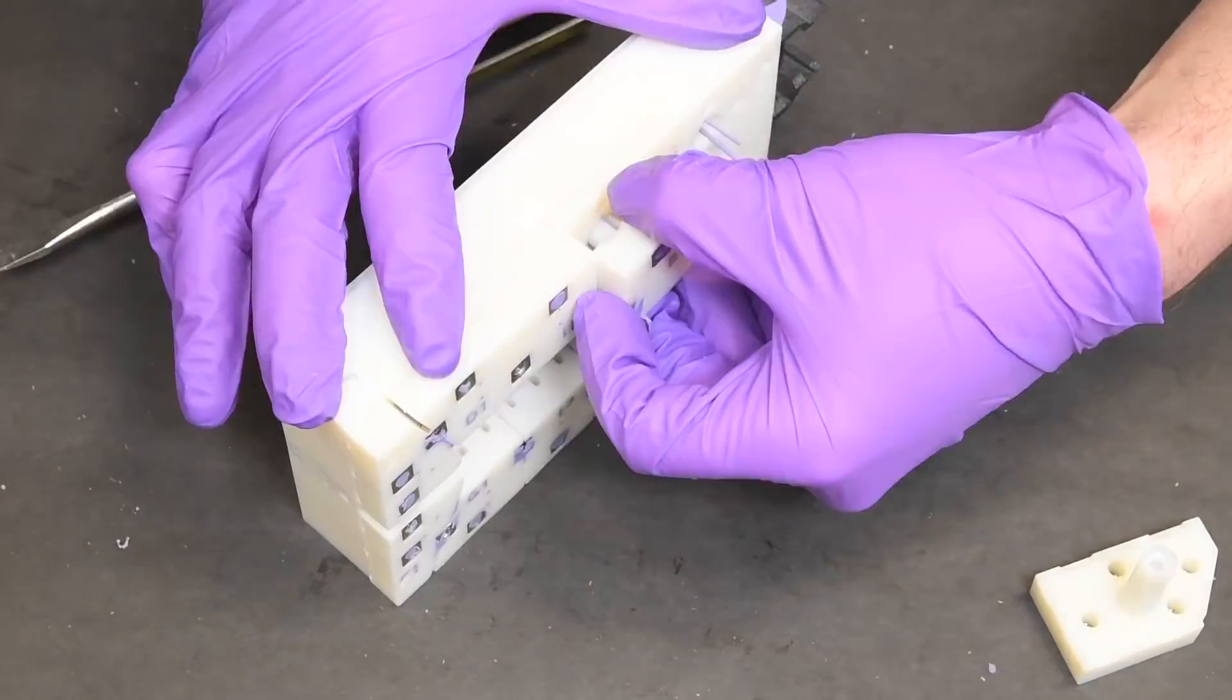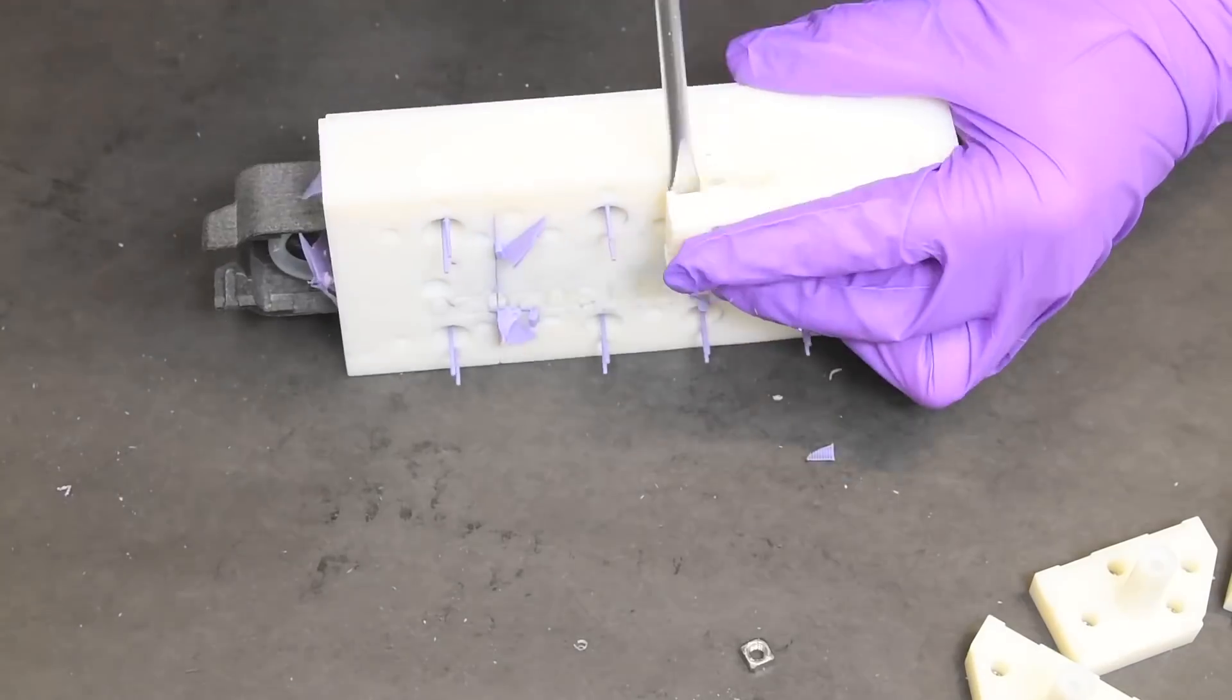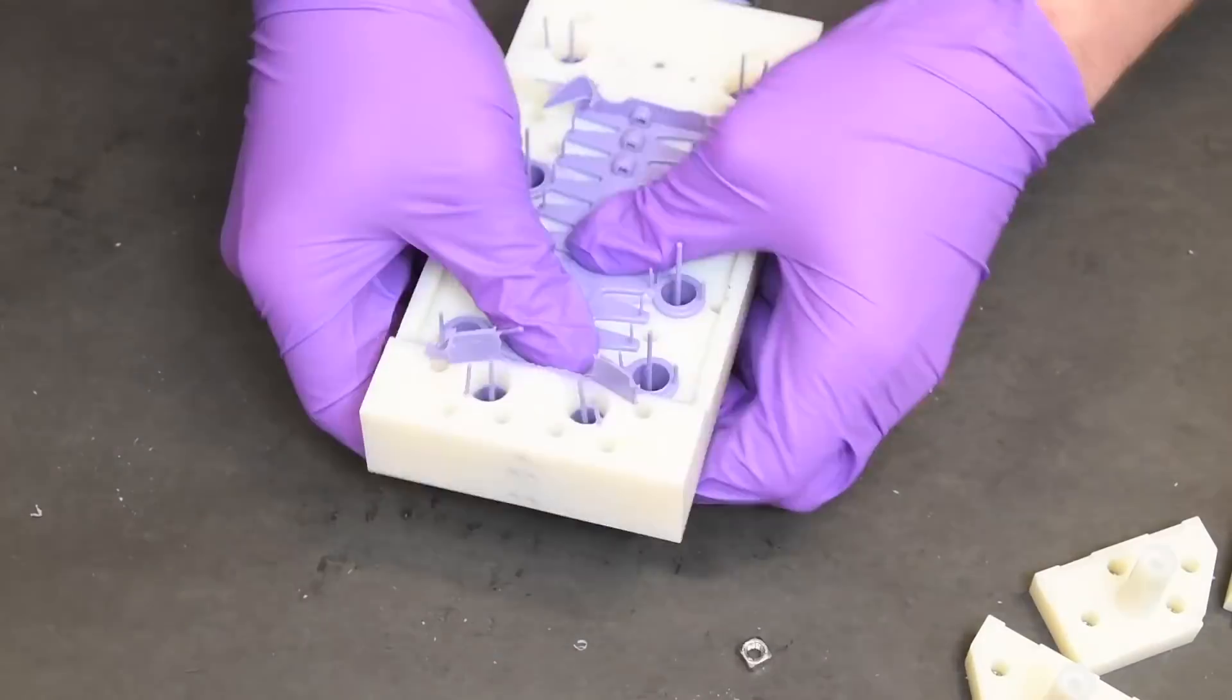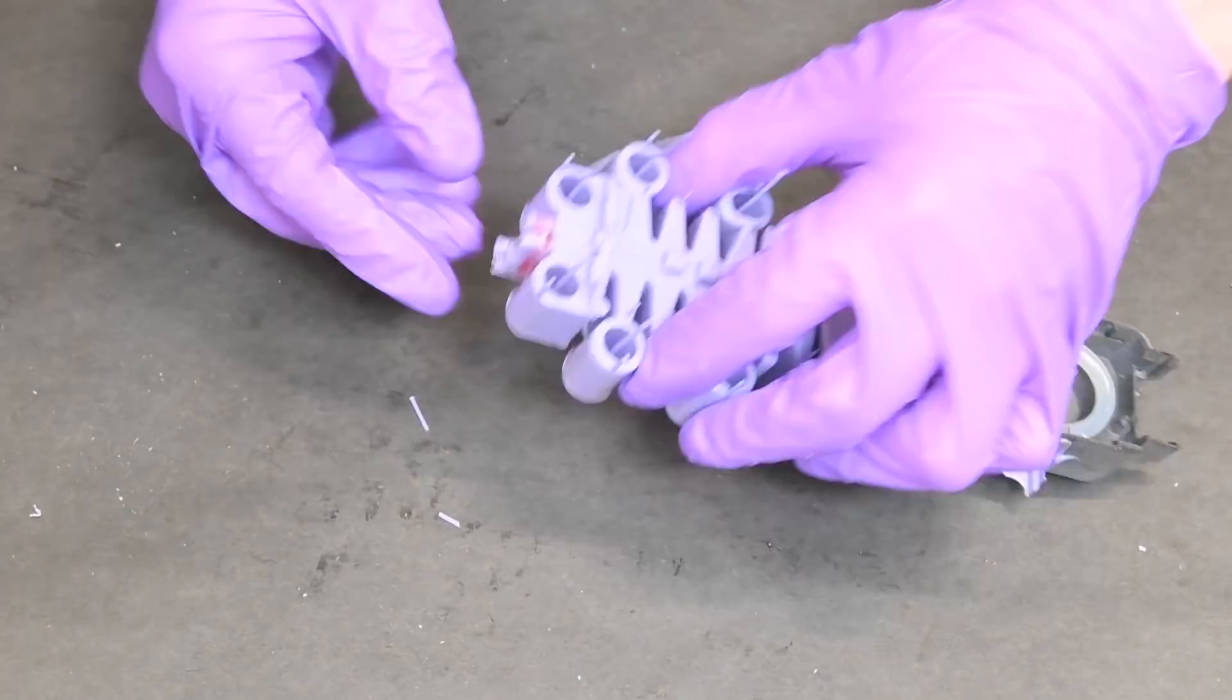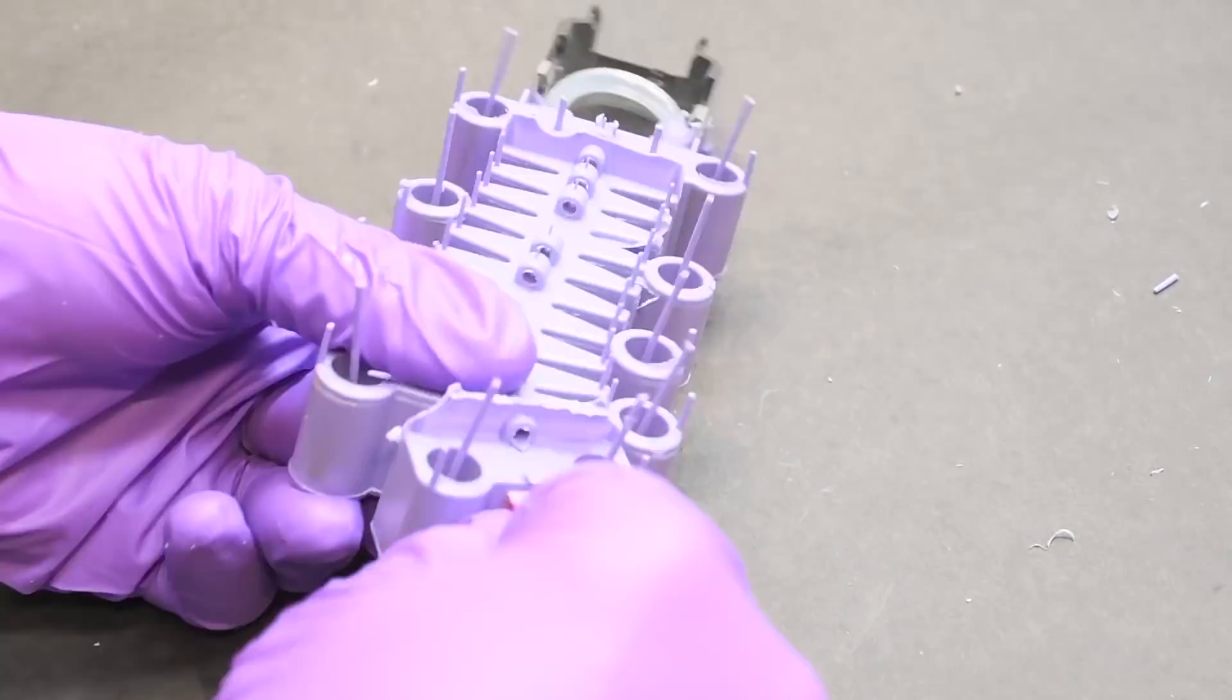We can then pry it apart and start taking those mold pieces out, one by one. We then have to massage the part out, which is still pretty tight in there despite having mold release. Now we need to take the soft cores out.